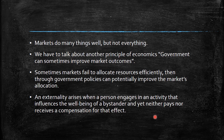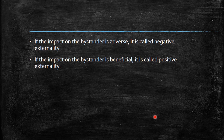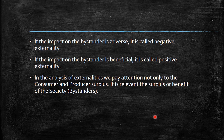Bystanders can be affected in a negative or positive way. Some people who live near the concert might enjoy listening to the music — that would be a positive externality. Others who can't stand the noise experience a negative externality. If the impact on the bystander is adverse, it's called a negative externality. When the impact is beneficial, it's called a positive externality.